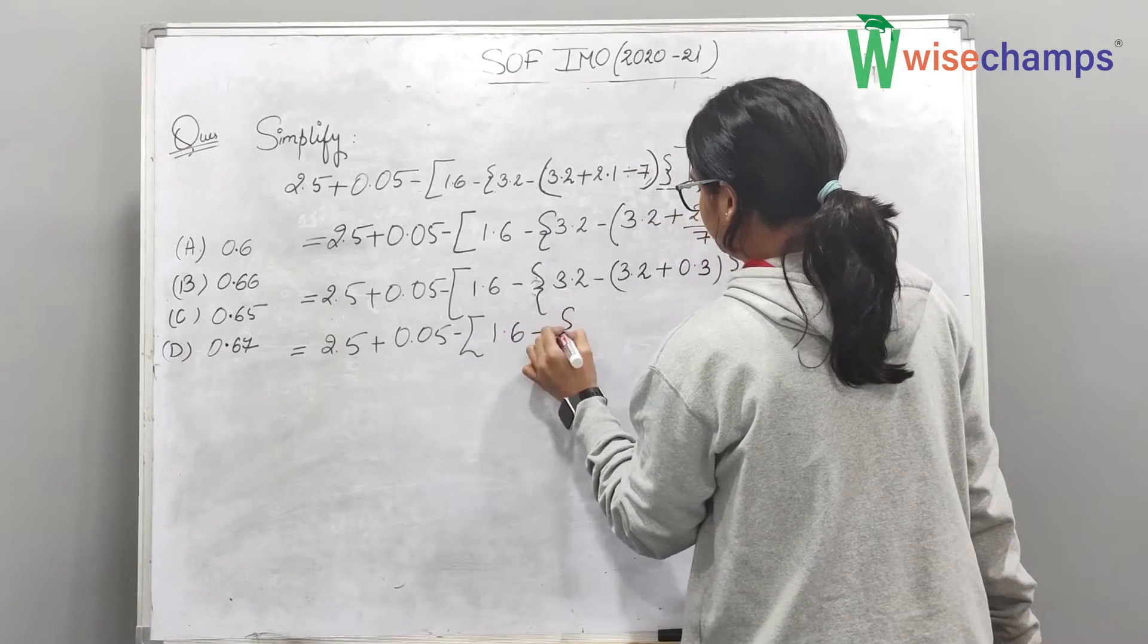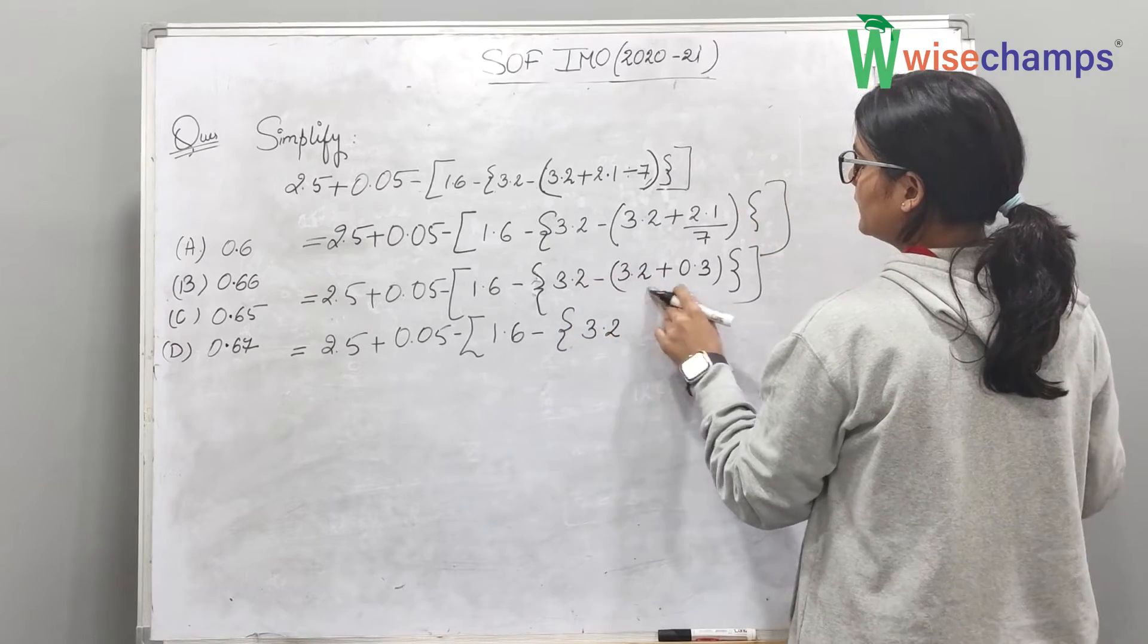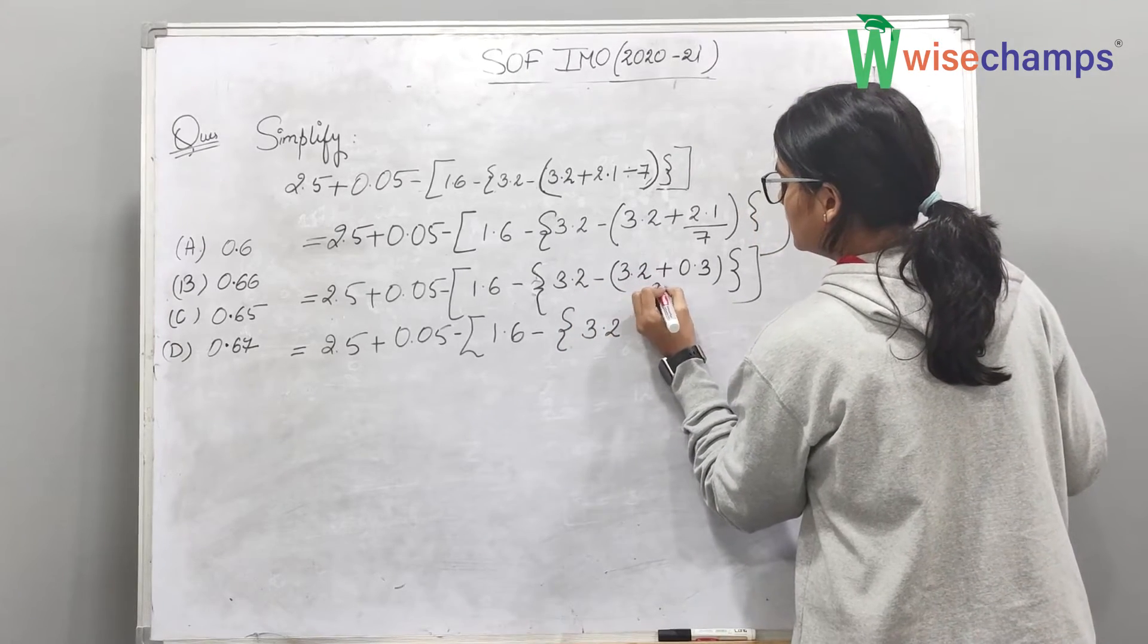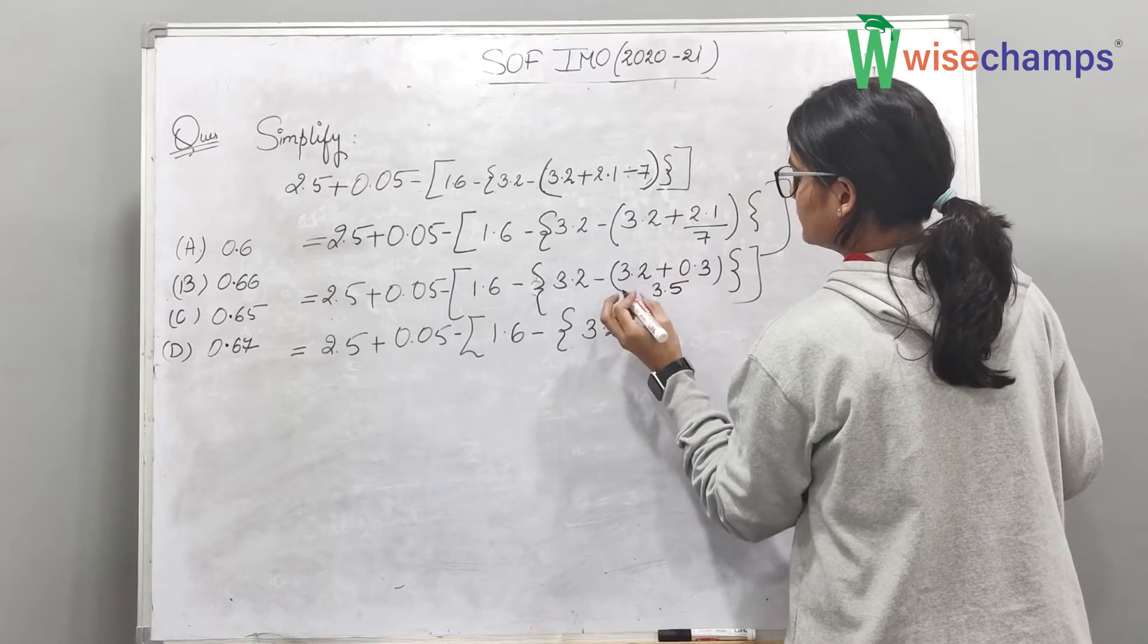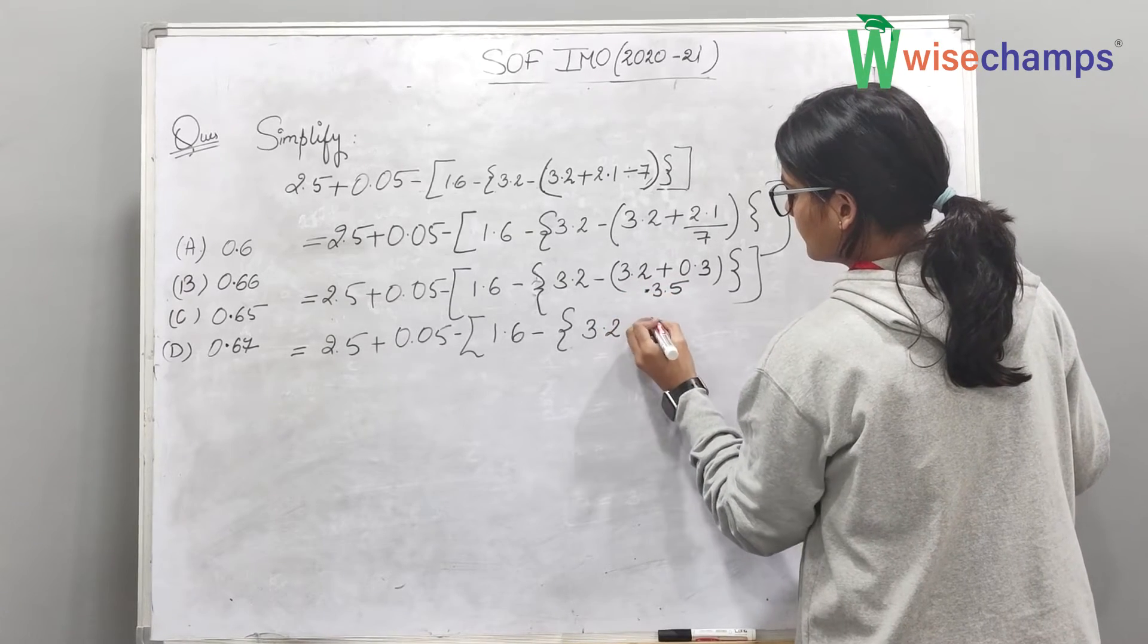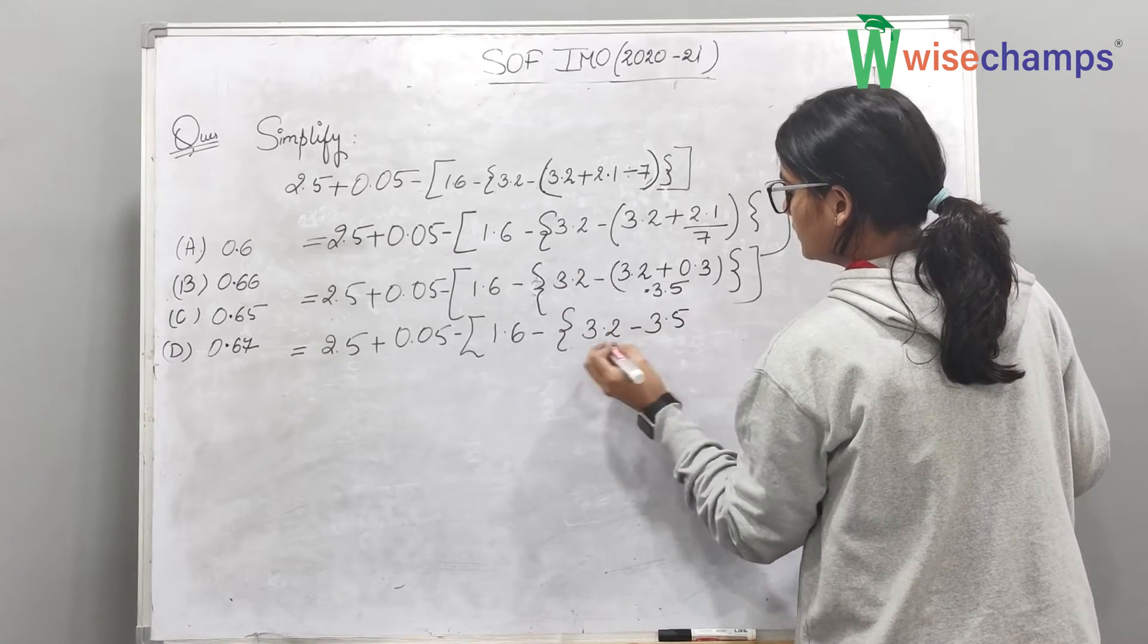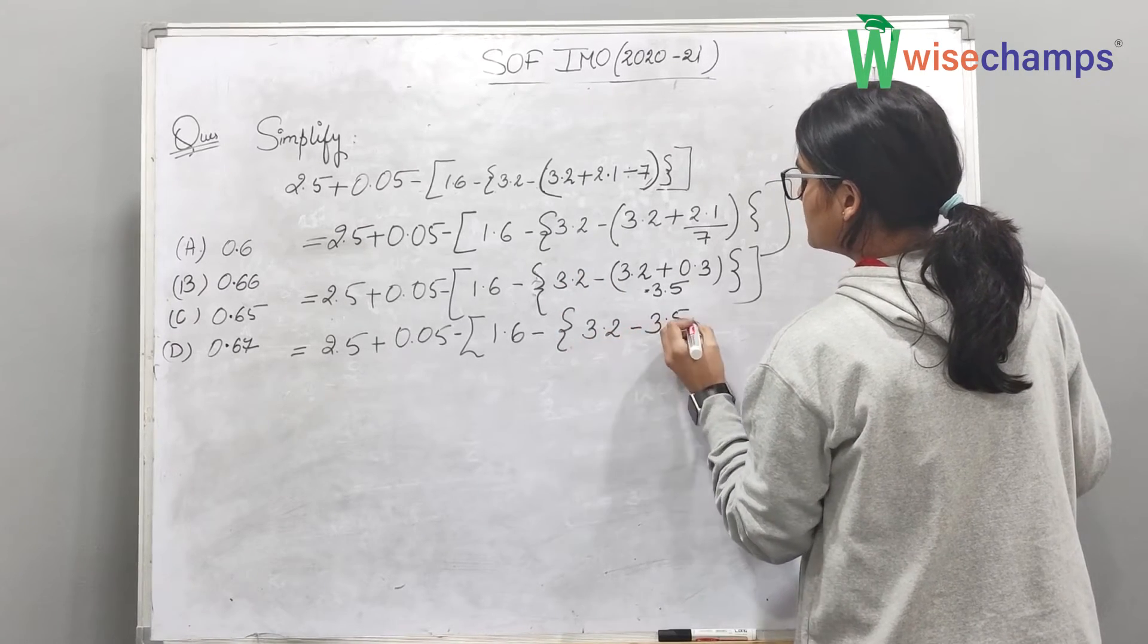After solving the small one, we get 3.5. And we will do 3.2 minus 3.5.